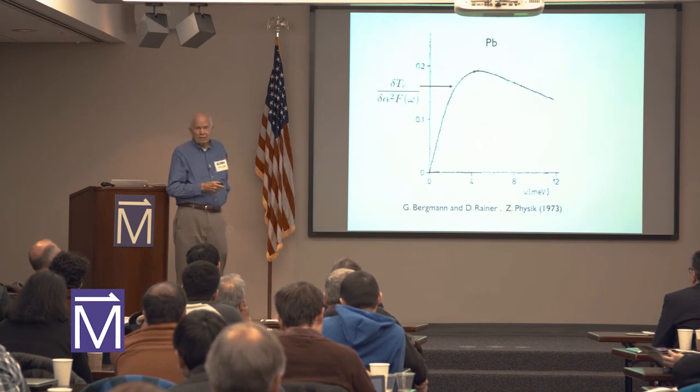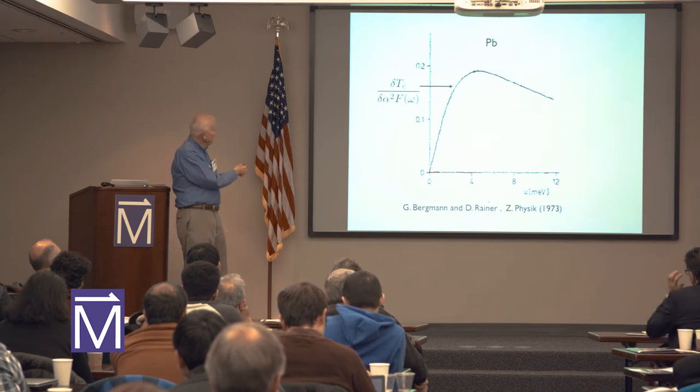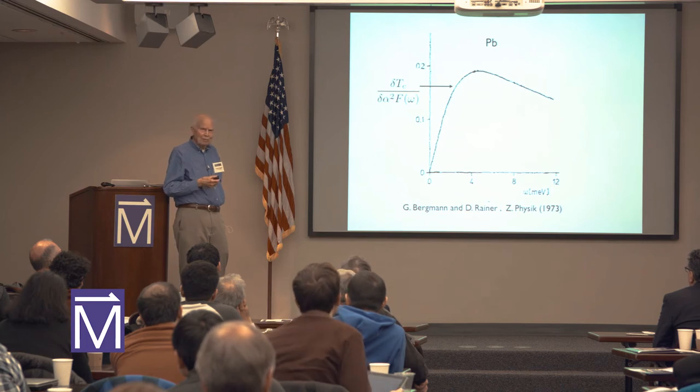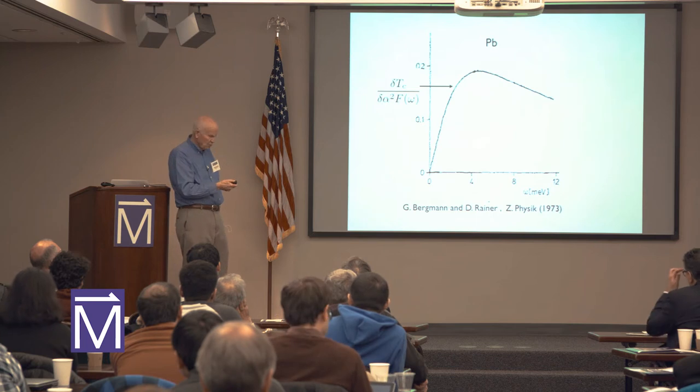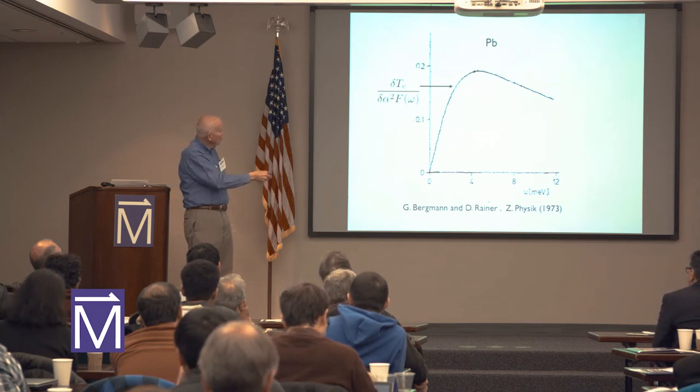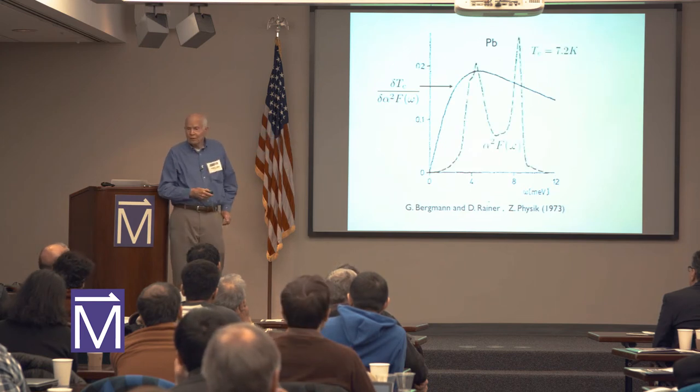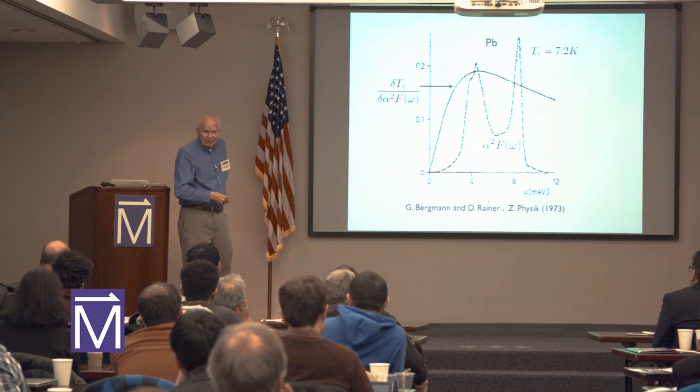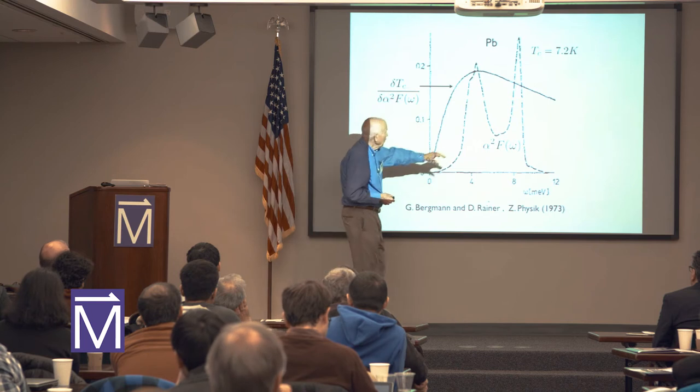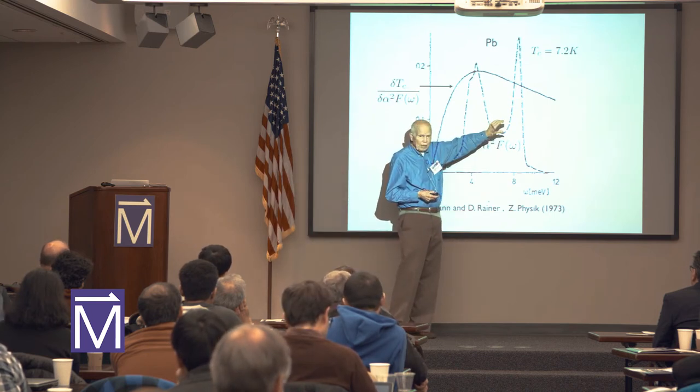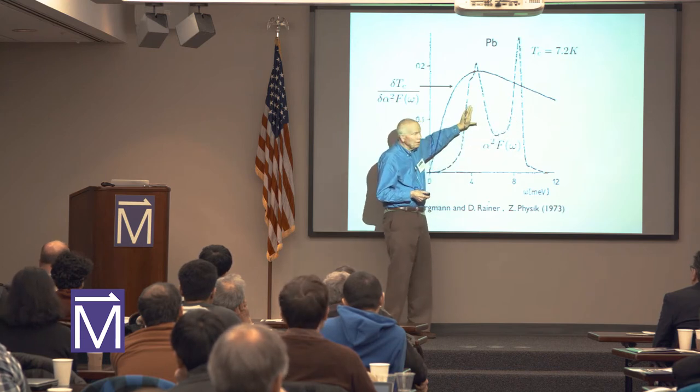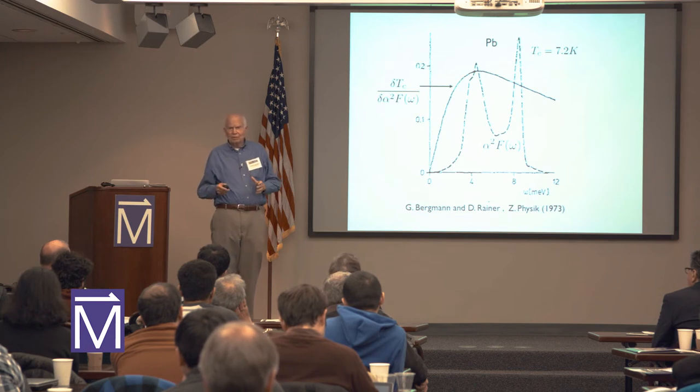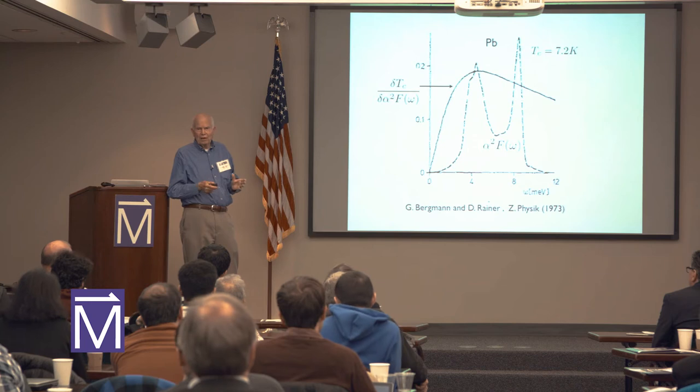For lead using Rowell-McMillan tunneling data, they found that the functional derivative rose up until it got around 4 millielectron volts for lead. That's perhaps three or four times the gap, but several times the gap you want to get up above this. Then there was a one over omega decay. This suggested where you might want your spin fluctuations. In lead there were transverse and longitudinal spin fluctuations. You could ask questions such as: if you could dope this with bismuth or change it to move spectral weight, could you raise the TC?